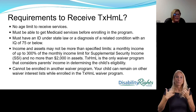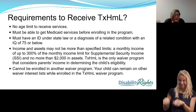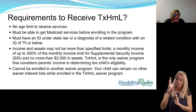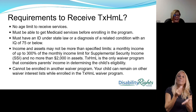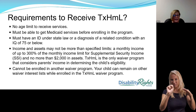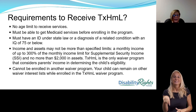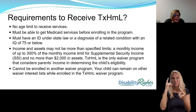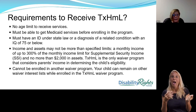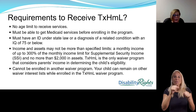The requirements to receive the Texas Home Living waiver: there is no age limit to receive these services. You must be able to get Medicaid services before enrolling in the program. You must have an intellectual disability under state law or a diagnosis of a related condition with an IQ of 75 or below. Income and assets may not be more than 300% of the max of SSI, and you can't have more than $2,000 in resources. Texas Home Living is the only waiver program that considers parental income in determining a child's eligibility. You cannot be enrolled in another waiver program and be in Texas Home Living, but you can remain on other interest lists while enrolled.